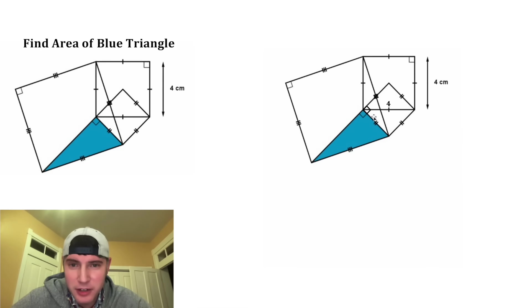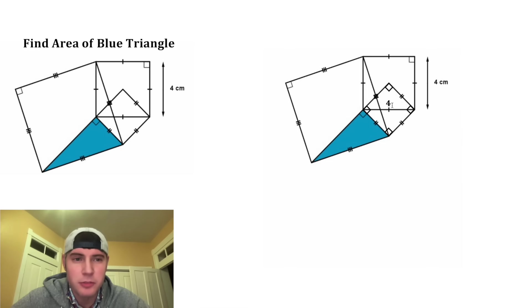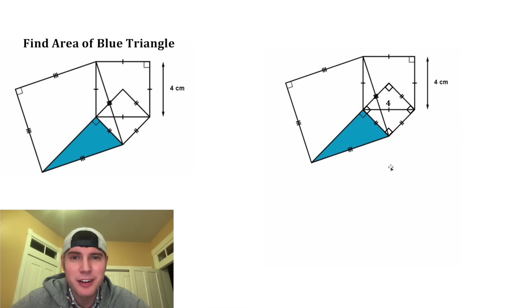We know that if this is a right angle, this is also a right angle. In a rhombus, opposite angles are congruent, so these two would be congruent and these two would also be congruent. So we know that this rhombus is a square.